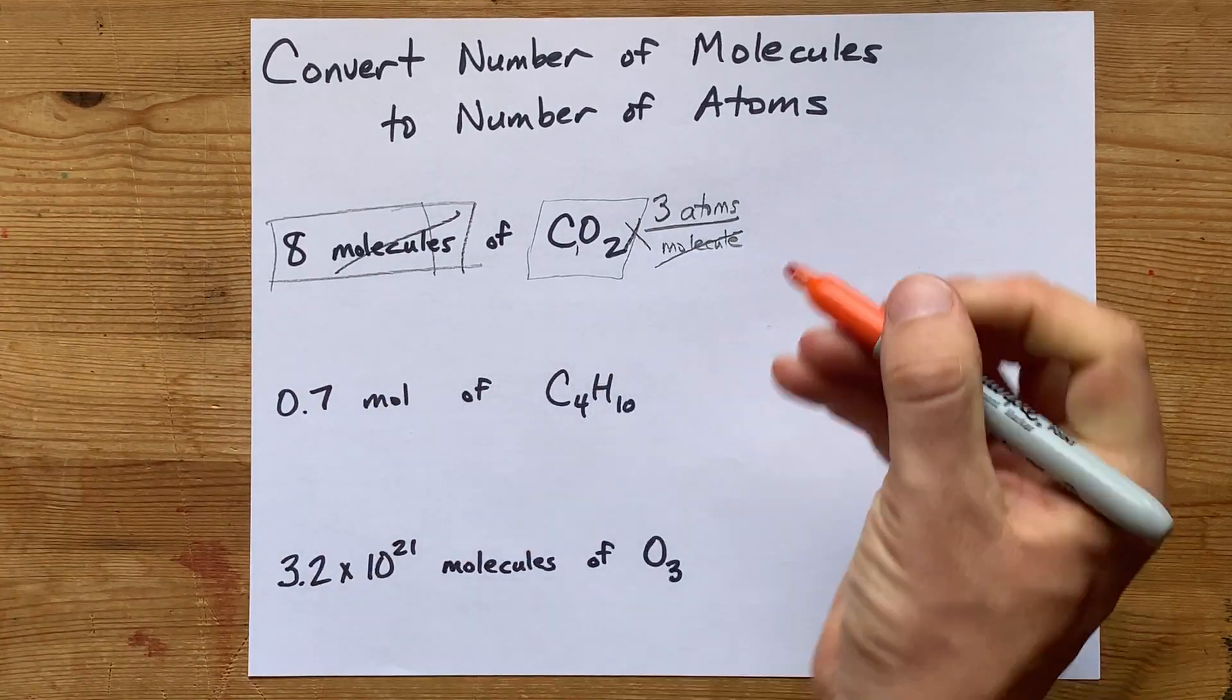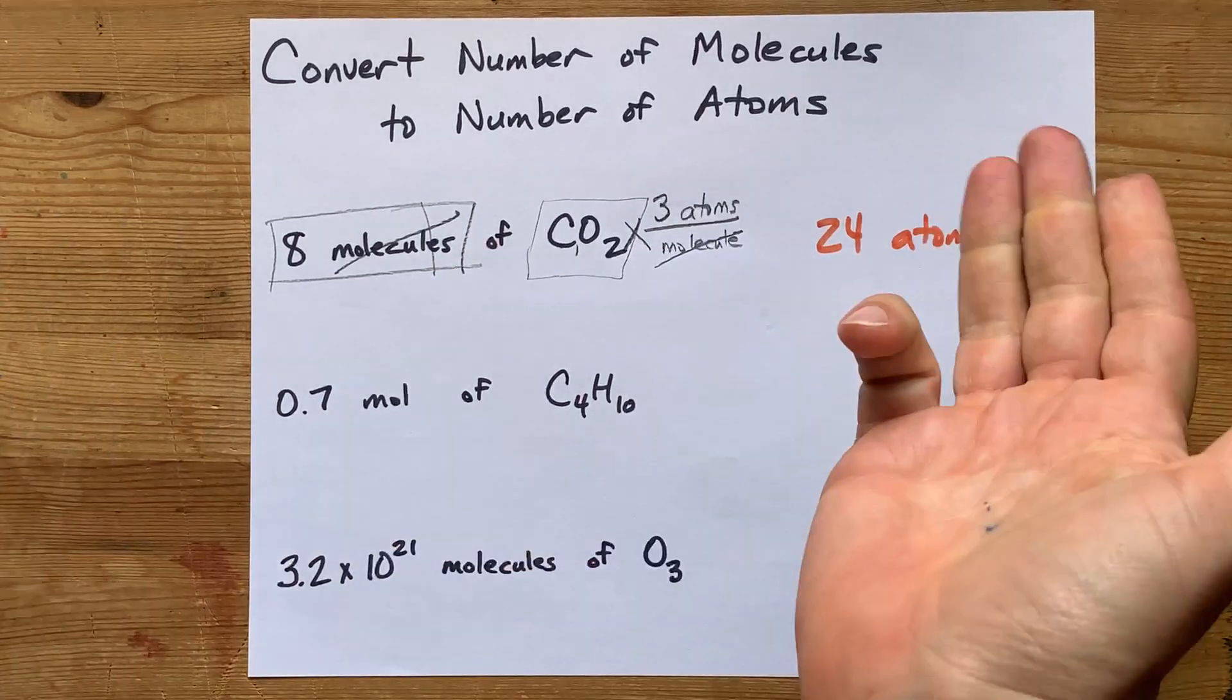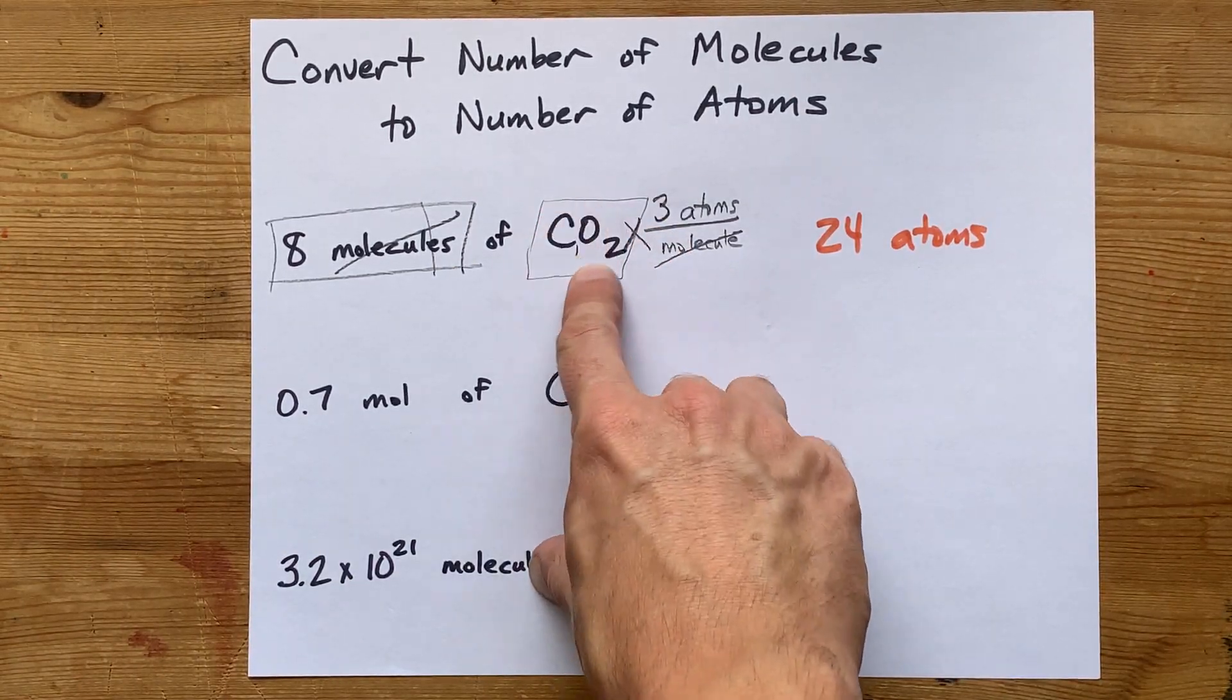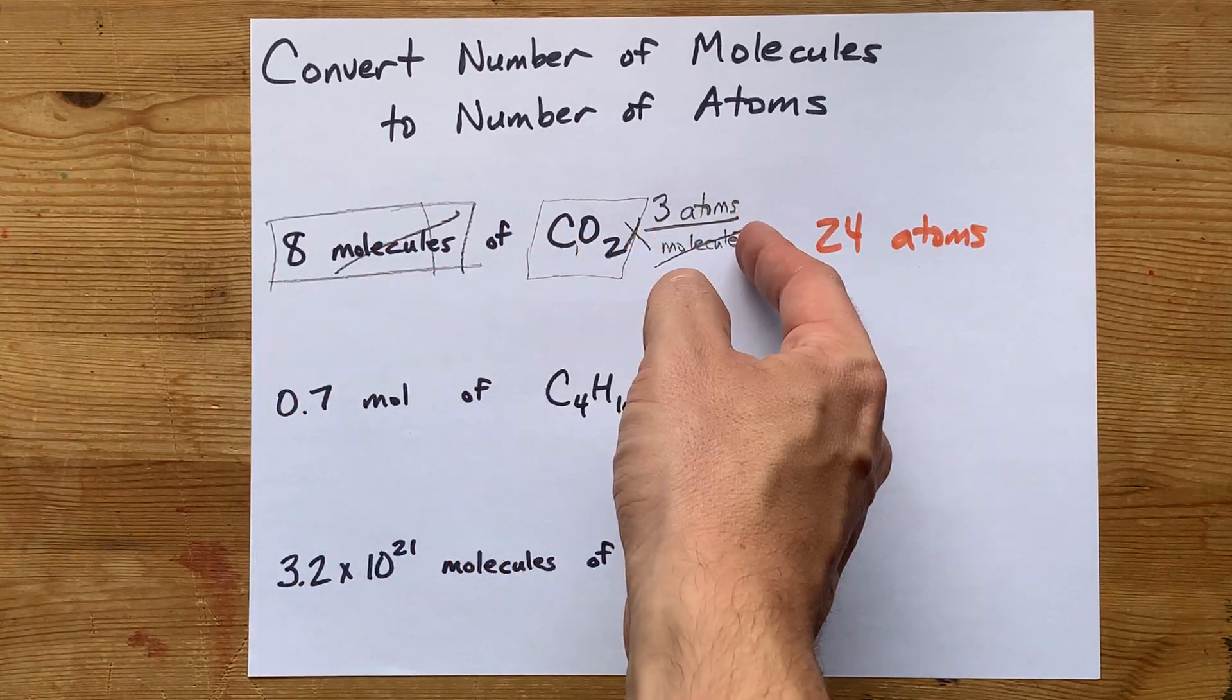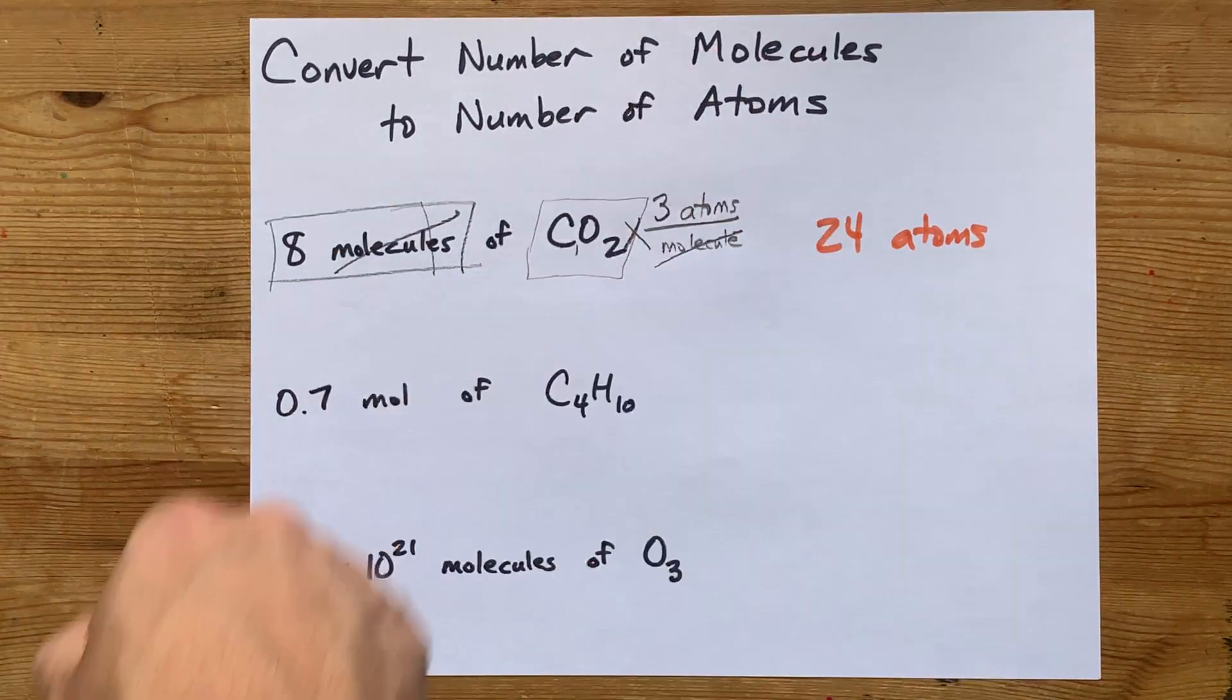Eight times three is 24 atoms total. So that probably makes sense. If you have packages of three, and this is three atoms, and then you have eight of those packages, you have eight times three equals 24 of the things.